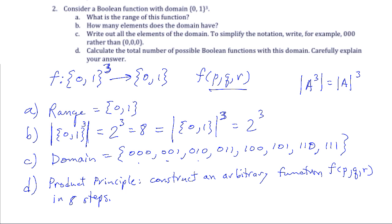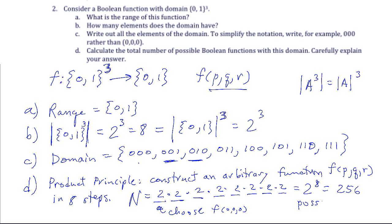We count how many ways there are to carry out those eight steps. In the first step, we choose f(000). The second step, we choose f(001). The third step, we choose the output for 010, et cetera. At each step we have two choices for the function. So I have 2×2×...×2 eight times, which is 2⁸, or 256 possible functions f(p,q,r).